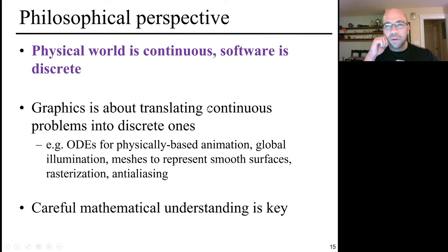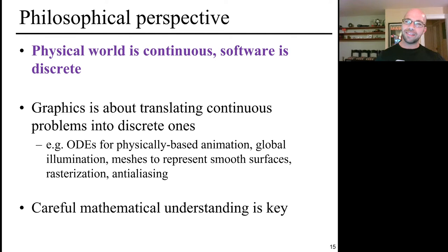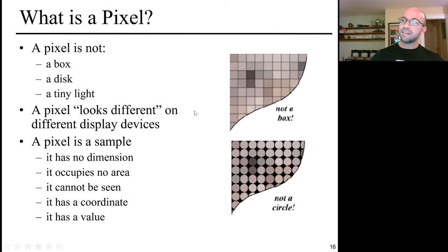This is a philosophical problem: the physical world is continuous, but software, displays, and sensors are all discrete. Graphics is a really unique universe, because it's all about translating these continuous problems into discrete ones. We've done this over and over again in this course — when we solved ordinary differential equations for physically-based animation, we had to discretize time; in global illumination and rendering, we have these different sampling techniques; we use meshes, which are discrete approximations of smooth surfaces. Getting a careful mathematical understanding is critical to understanding what's going on.